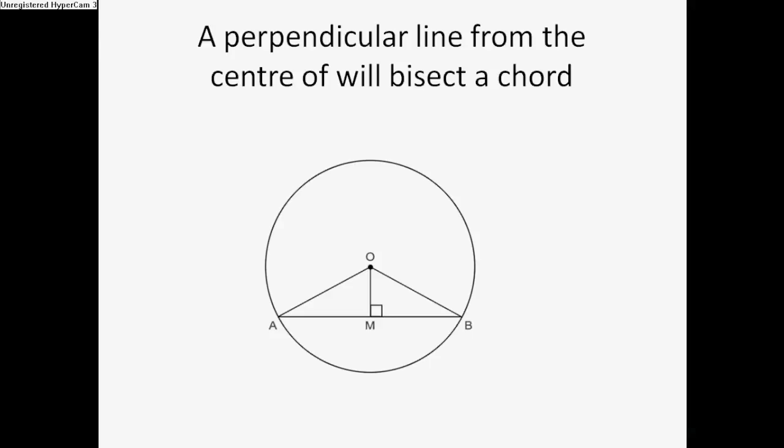A perpendicular line from the centre will bisect a chord. So basically AB is the chord, OM is the perpendicular line from the centre O, and it will bisect the line AB.